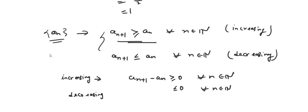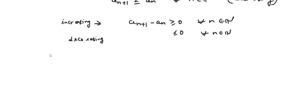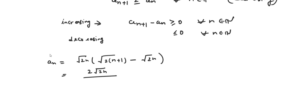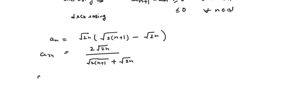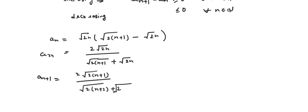For our sequence a_n = √(2n) · (√(2n+1) − √(2n)), we can also write it as 2√(2n) / (√(2n+1) + √(2n)). So a_{n+1} will be 2√(2(n+1)) / (√(2n+2) + √(2n+1)), which simplifies to 2√(2n+2) / (√(2n+2) + √(2n+1)).